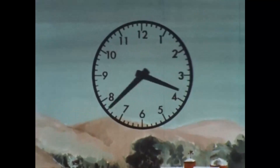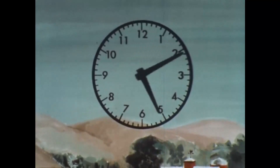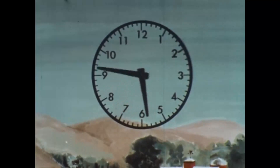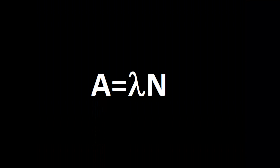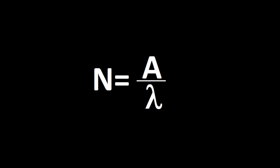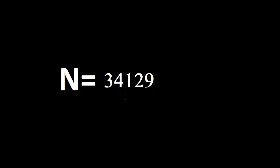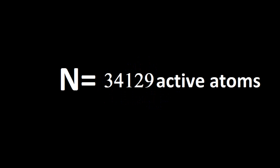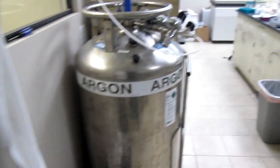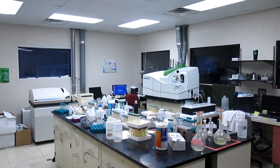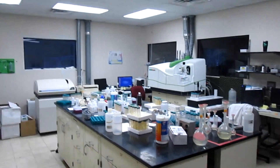The activity is the number of decaying atoms every second. Multiply that by its probability and we get A equals N times lambda, or N equals A divided by lambda. So we can detect roughly 34,129 active atoms. That's not a lot, and far exceeds the detection limit of other instruments — more on that later.